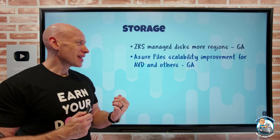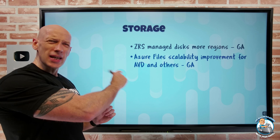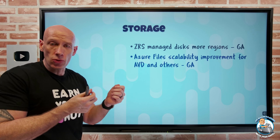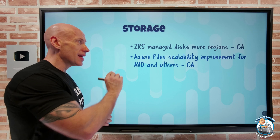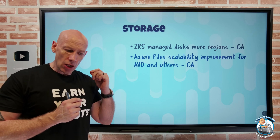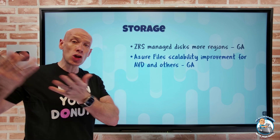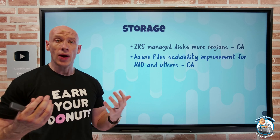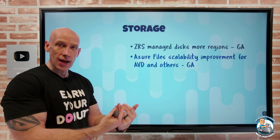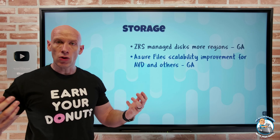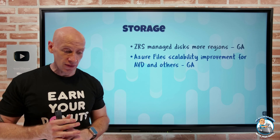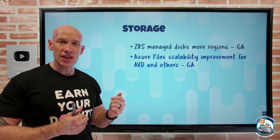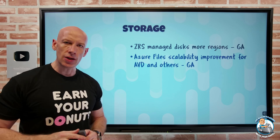Azure Files has had a scalability improvement. Azure Virtual Desktop is a big scenario, but it applies to any workload that uses root folder level handles. In the past, there was a maximum of 2,000 root directory handles. They've increased that up to 10,000, for both standard and premium file shares. This is a big deal for Azure Virtual Desktop with FSLogix, which creates one root directory handle per profile — so previously you could only have 2,000 profiles per Azure file share, and now you can have 10,000. Any workload relying on root directory handles benefits from this five-times improvement.